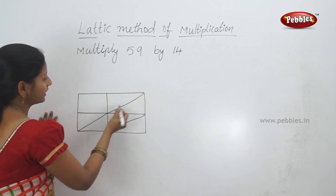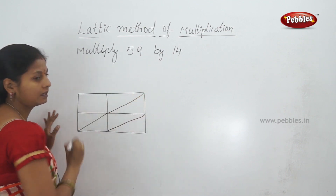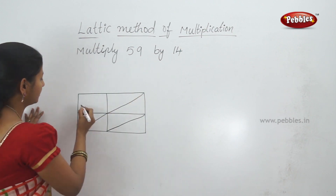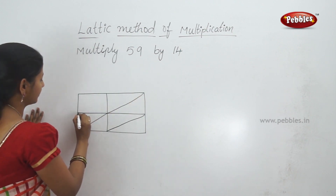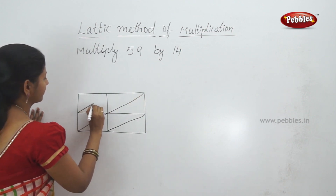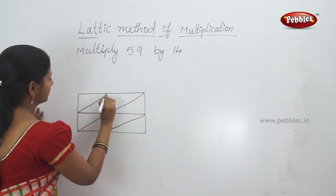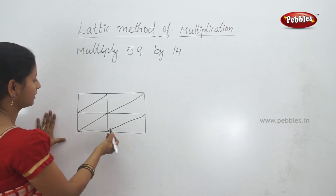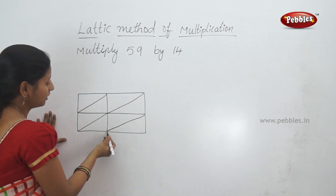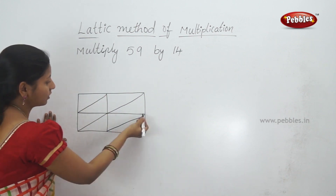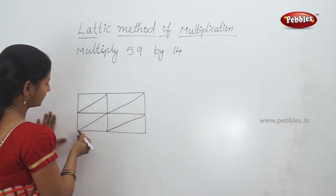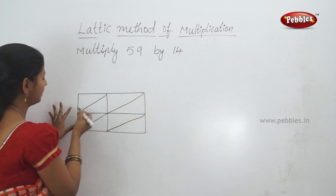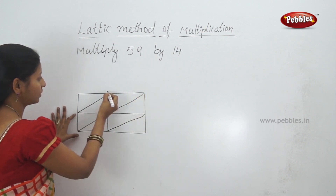Every box will join the opposite corners. The diagonal lines connect the corners of each box. In the last box, the corners are connected diagonally.